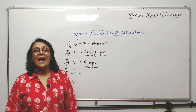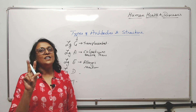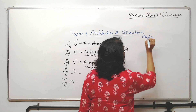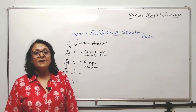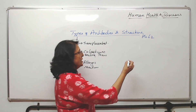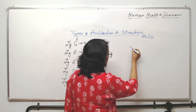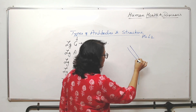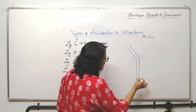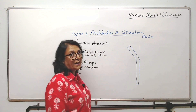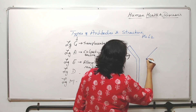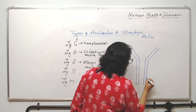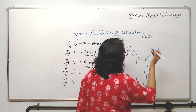A typical antibody has a Y-shaped structure and is known as H2L2. It has two heavy chains and two light chains. If you draw the structure, the heavy chains are polypeptides — heavy because they are made up of a greater number of amino acids.